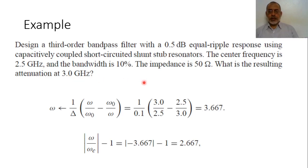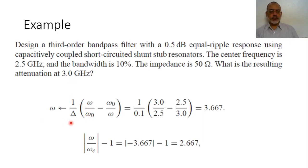To begin determining the attenuation at 3 GHz, we use the frequency transformation from bandpass to lowpass. The relation is: omega equals 1 over delta times (omega over omega_0 minus omega_0 over omega), which corresponds to omega in the lowpass filter prototype.